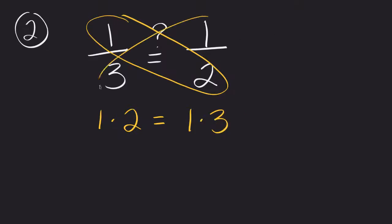Okay, so we do our extremes and our means. 1 times 2 gives me 2. 1 times 3 gives me 3. Are those the same? No. So we can now know that those fractions are not the same value. Are not equal to each other.